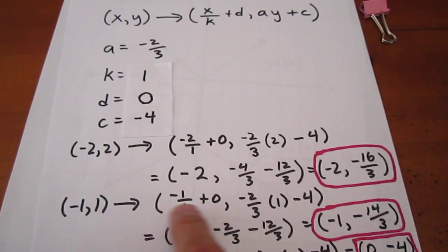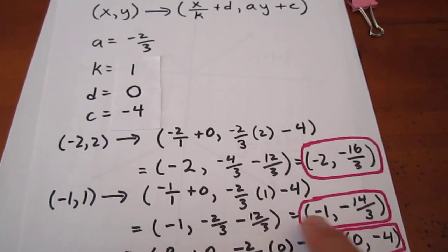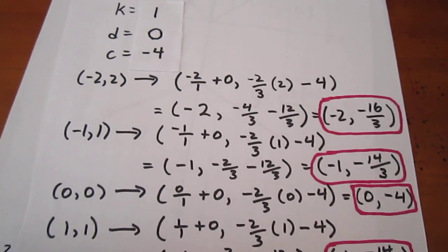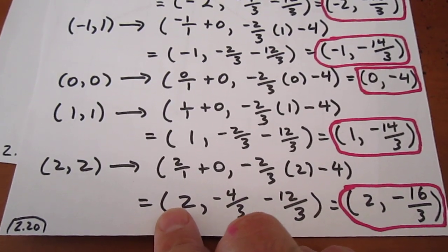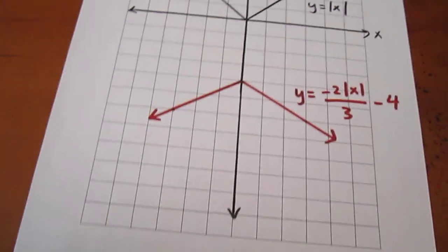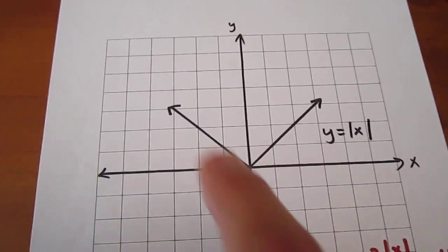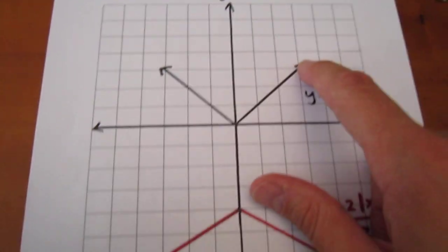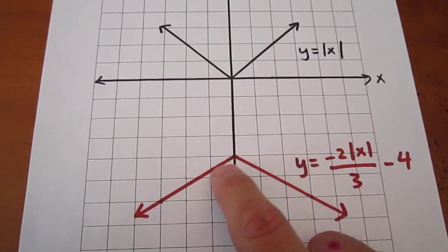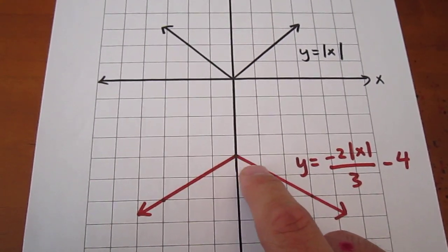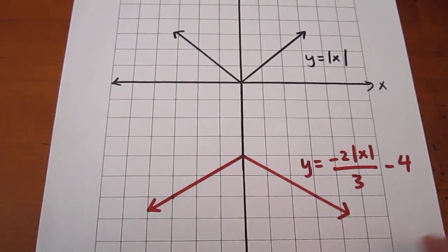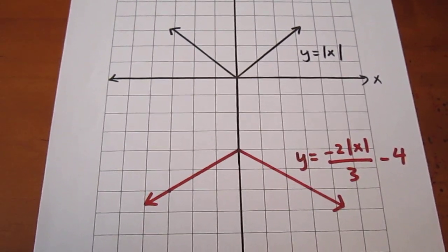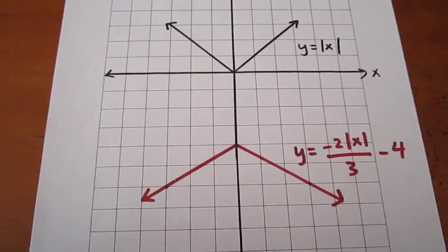Similarly, negative 1, 1 gets pushed through the machine and comes out as negative 1, negative 14 thirds. The point 0, 0 becomes 0, negative 4, and 1, 1 and 2, 2 also become transformed. Again, what we have is our parent function, as well as the points that got pushed through the machine that we're able to plot, and then the curve that we're able to connect using the same type of behavior as the parent function.